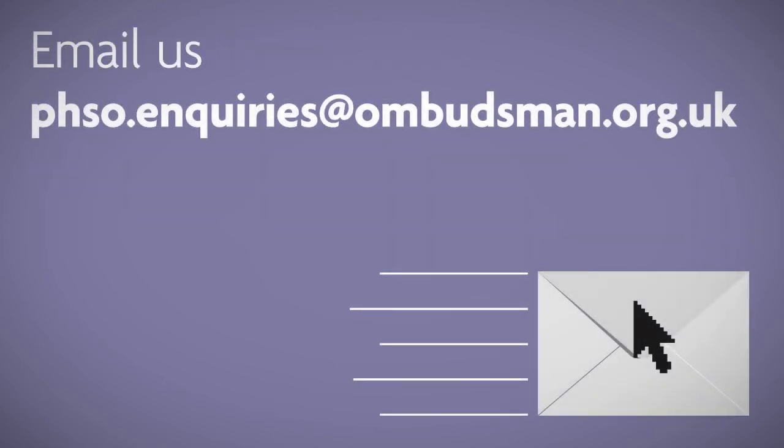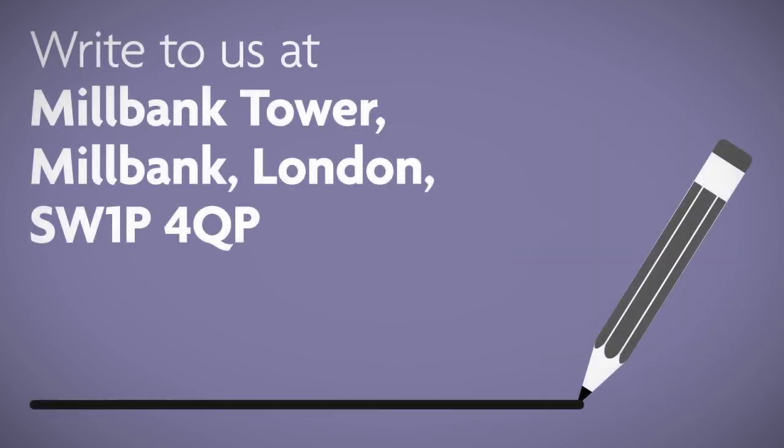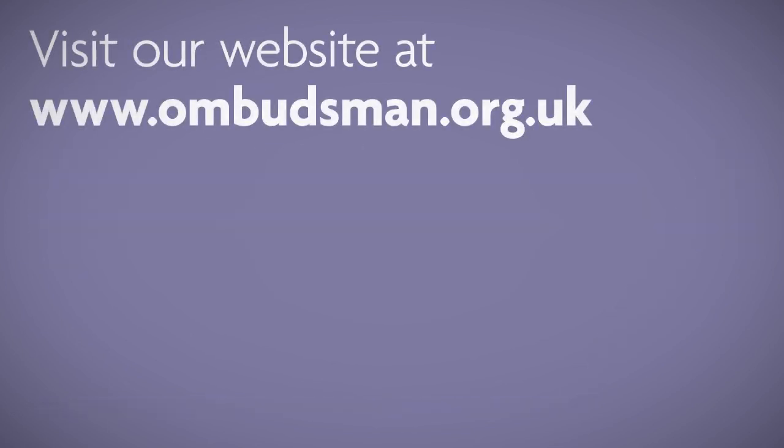Email us at phso.enquiries@ombudsman.org.uk. Fax us on 0300 061 4000. Write to us at Millbank Tower, Millbank, London SW1P 4QP. Visit our website www.ombudsman.org.uk